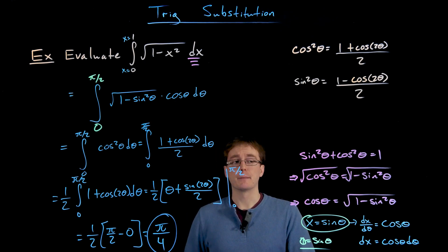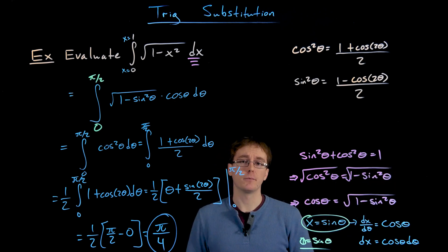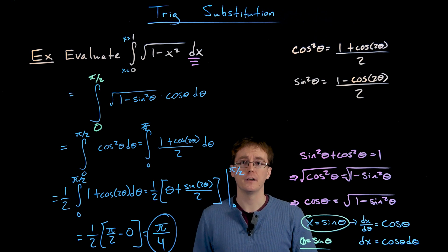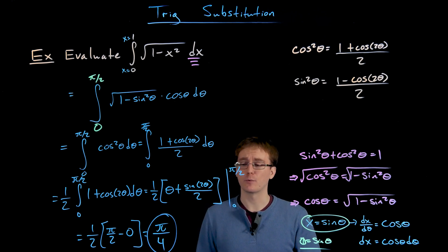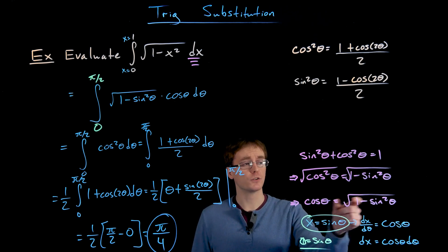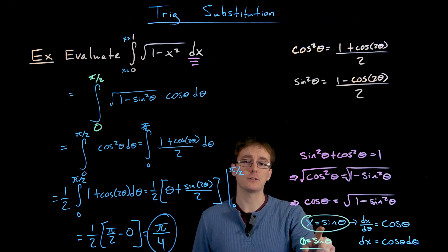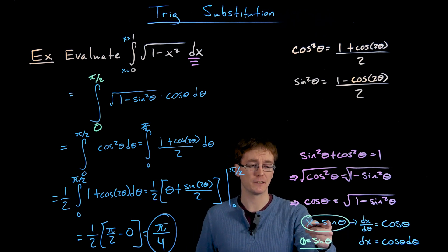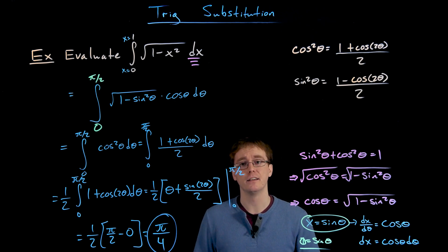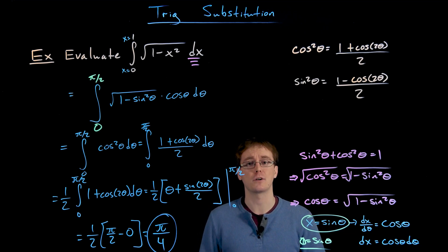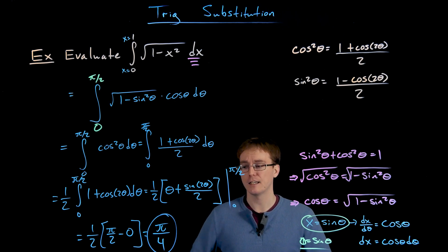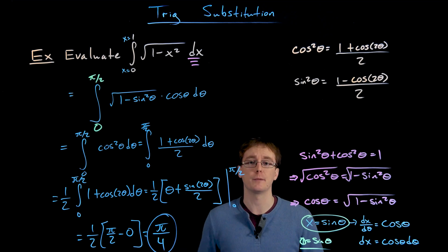One final note: when manipulating our trigonometric identity, I made an arbitrary choice to subtract sine squared from each side. I could have subtracted cosine squared instead, and all our work would be very similar, giving the exact same answer. If we subtract cosine squared, we'd eventually set x equal to cosine of theta, and differentiating cosine gives us negative sine for dx. We stick with the sine substitution just to avoid tracking that negative sign, but using a cosine substitution is good practice to confirm you get the same answer.